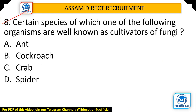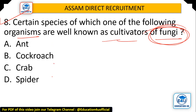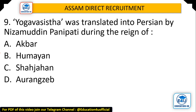Question: Certain species of which one of the following organisms are well known as cultivators of fungi? Options: Ant, Cockroach, Crab, and Spider. The answer is Ant. Ants are responsible for cultivating fungi.